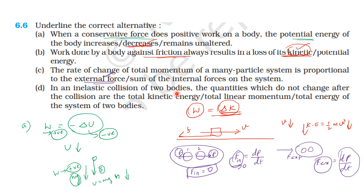In an inelastic collision of two bodies, the quantities which do not change after the collision are the total linear momentum and the total energy of the system. In an isolated system, energy is conserved — the total energy remains constant, though it may be exchanged between kinetic and potential energy forms.